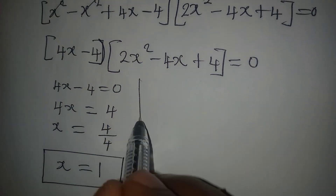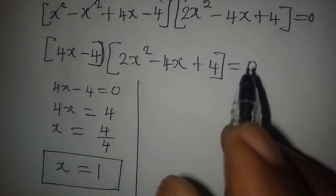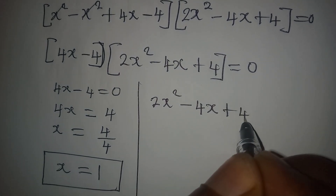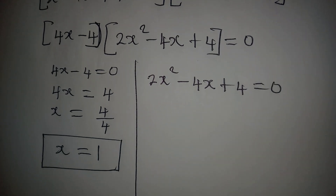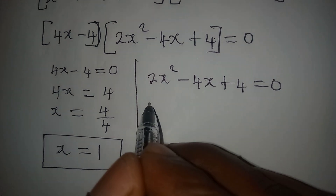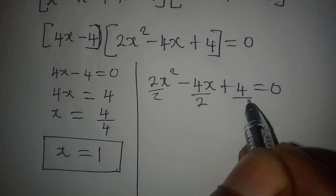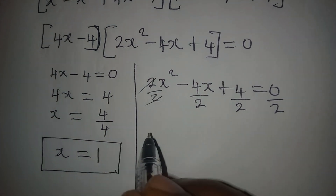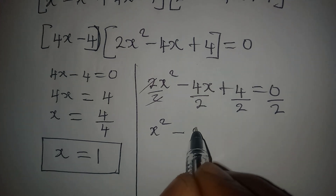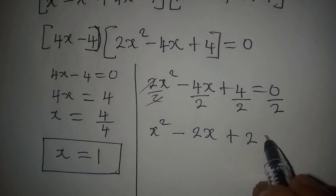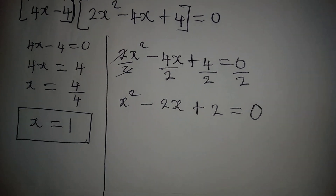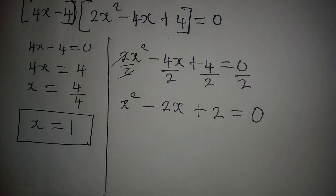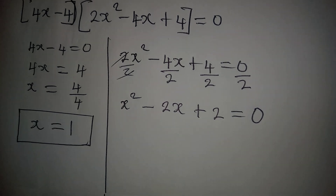To get the other solutions, we pick the quadratic expression and equate it to 0: 2x squared minus 4x plus 4 equals 0. We have a quadratic equation, so we can divide both sides by 2, giving x squared minus 2x plus 2 equals 0. The next step is to use the quadratic formula method to solve this.